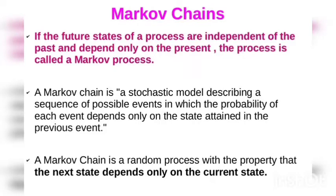A Markov Chain is a stochastic model describing a sequence of possible events in which the probability of each event depends only on the state attained in the previous event. A Markov Chain is a random process with the property that the next state depends only on the current state.